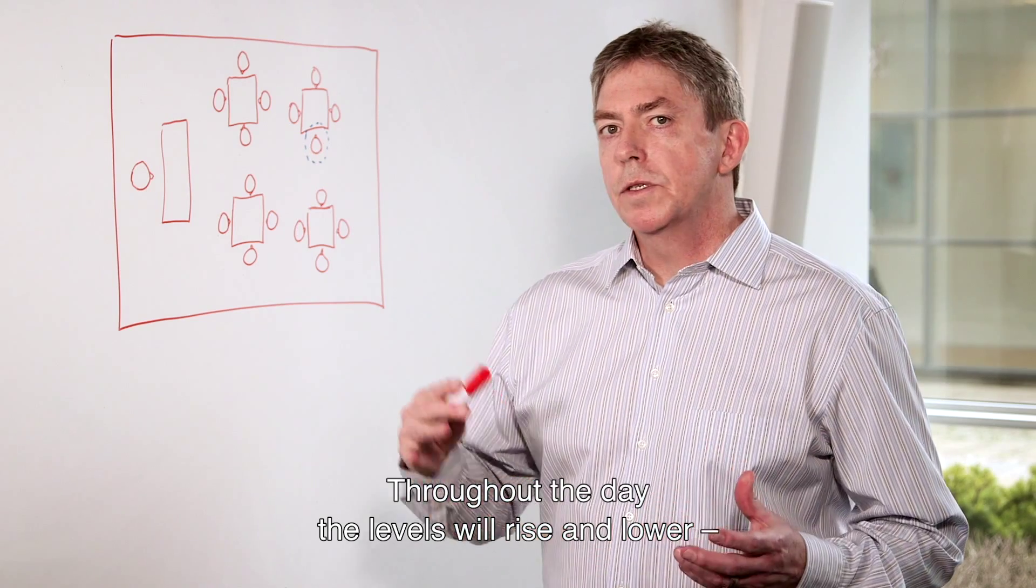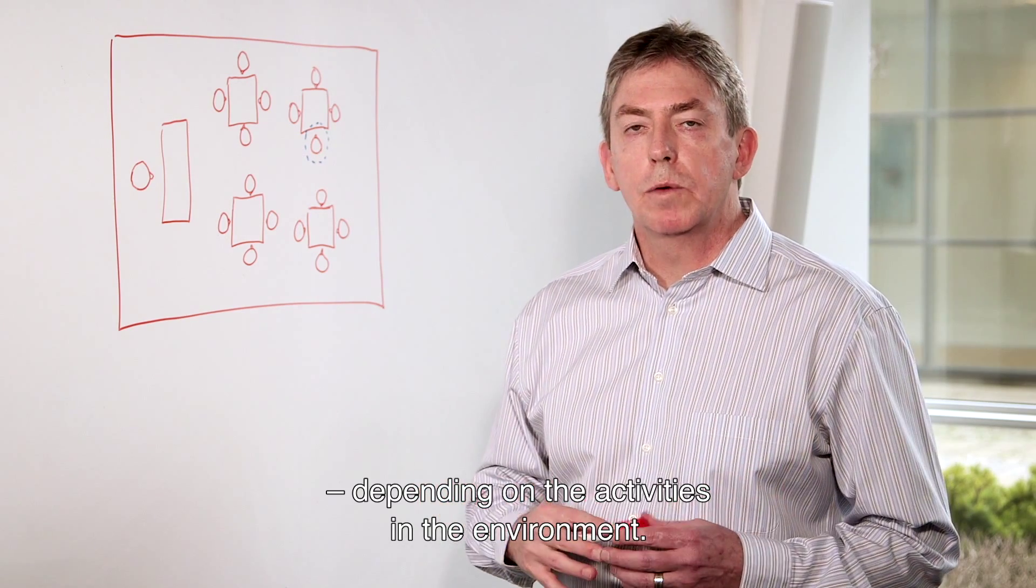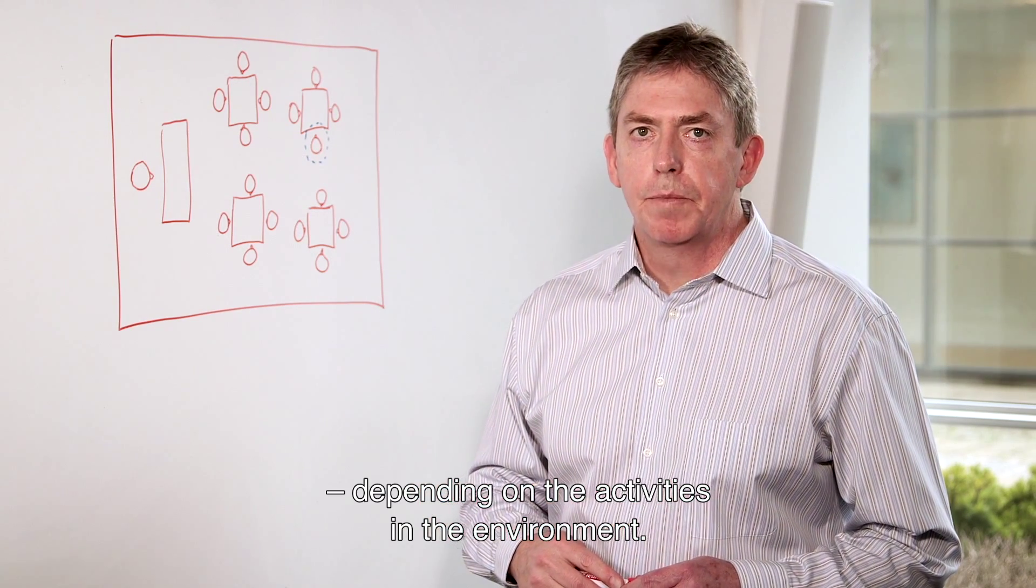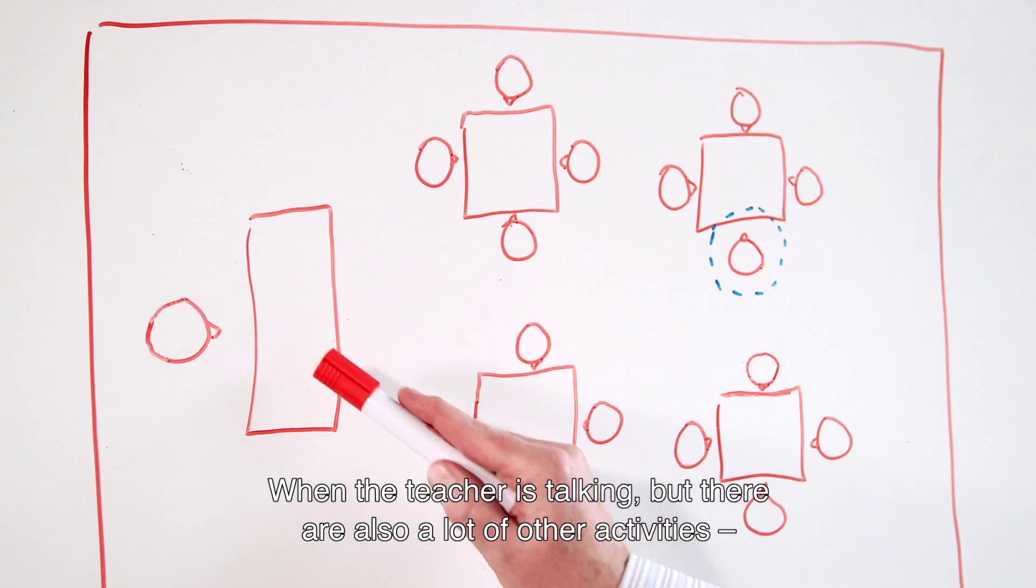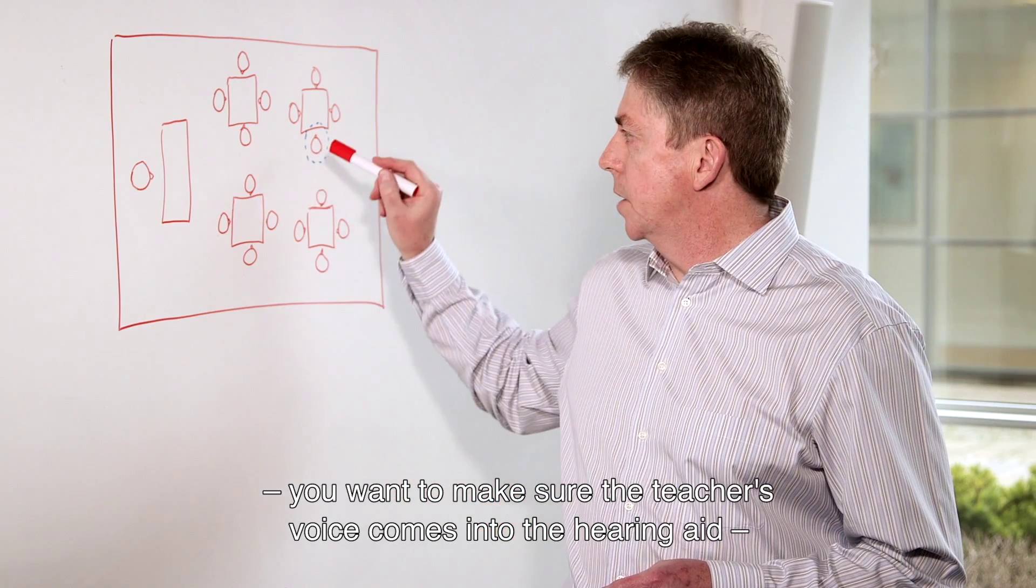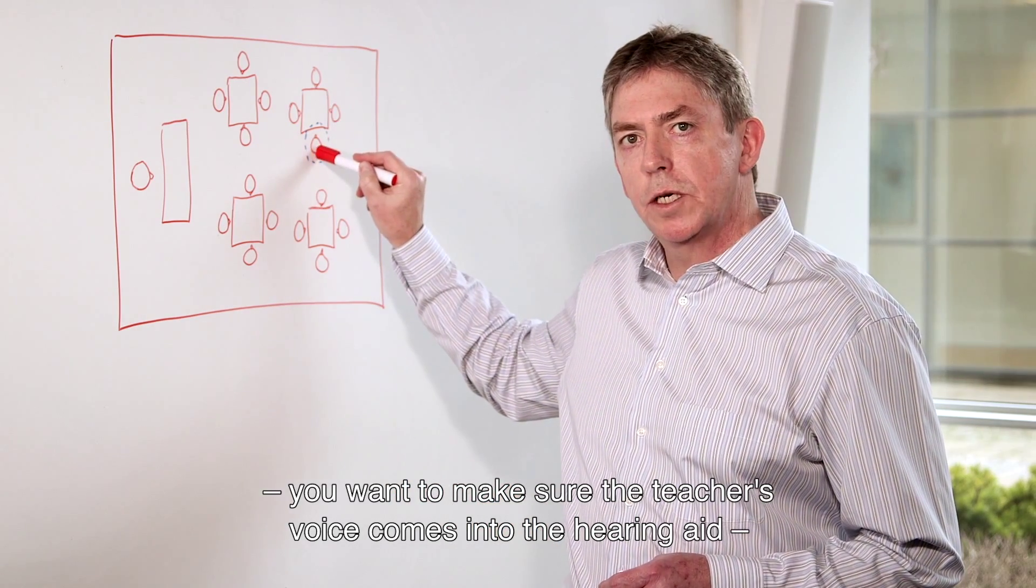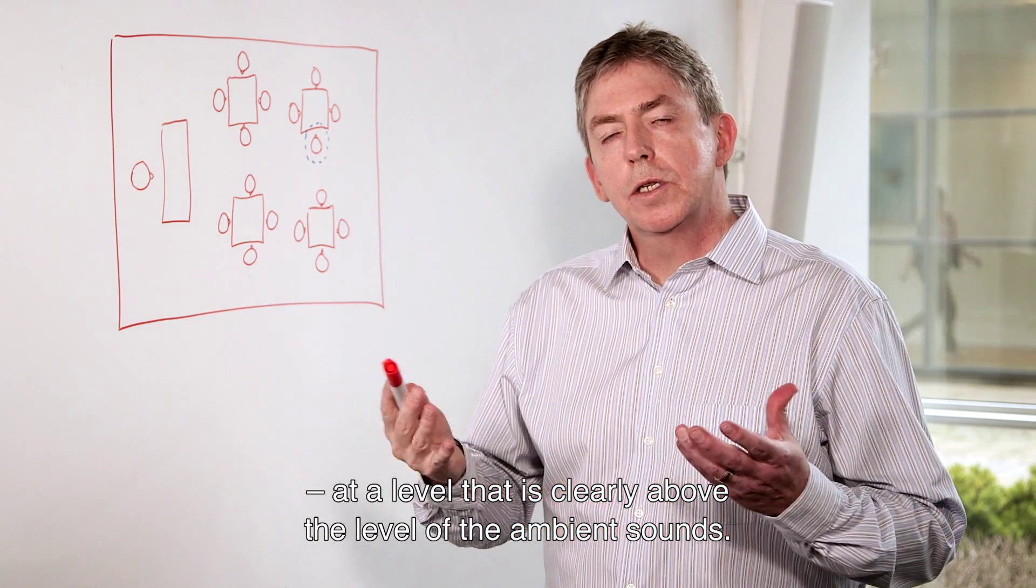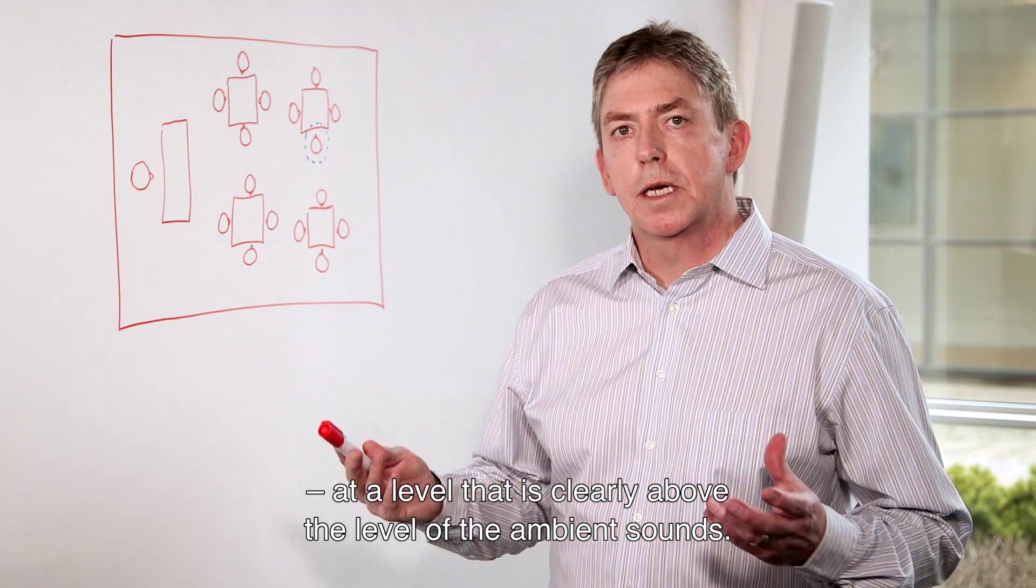Throughout the course of the day, the levels will rise and lower depending on what activities are happening in the environment. In situations where the teacher is talking but there's also a lot of other activity happening in the classroom, you want to make sure that the teacher's voice comes into the child's hearing aid at a level that is clearly above the level of the ambient sounds in the room.